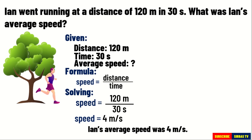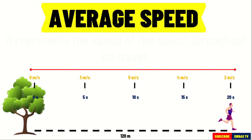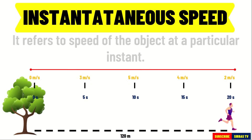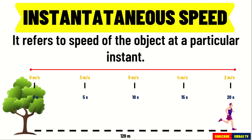This means that Ian can cover 4 meters every second. The problem asks for average speed because it represents the speed of the participant throughout his entire travel. During his travel, there were instants when his speed would vary. His speed at any given instant is called instantaneous speed.